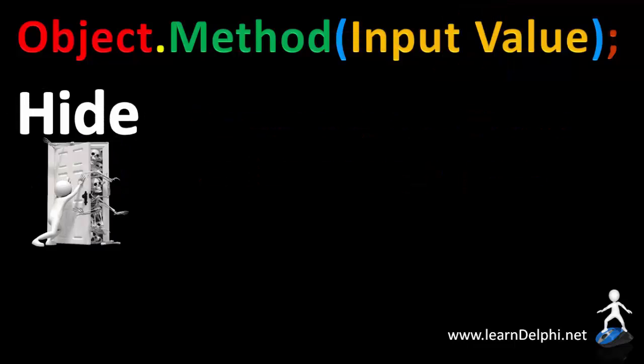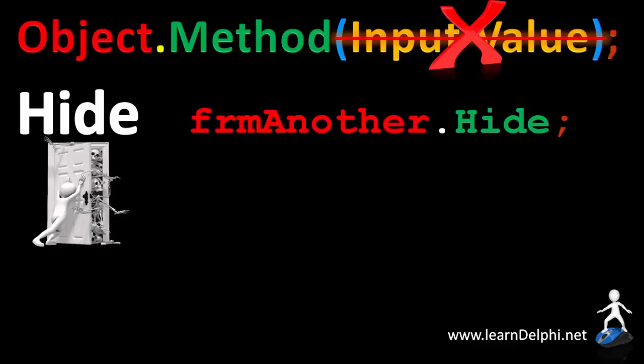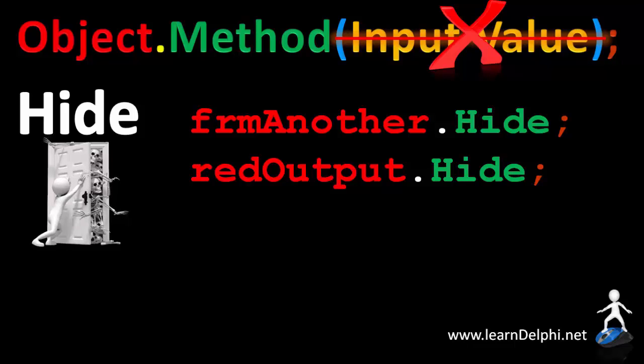The opposite of show is the hide method. The hide method also doesn't have input values. This statement hides the form named frm another. And this statement hides a rich edit named red output.